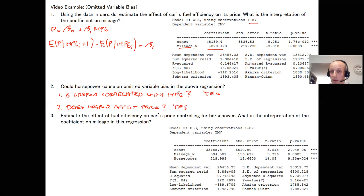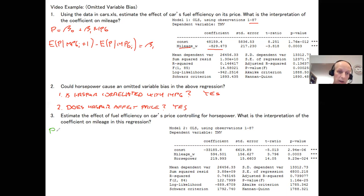So let's see what happens when we try to cure the omitted variable bias by including the omitted variable into the regression. We do that in model number two, where we regress price on both mileage — the same variable as in the first regression — and also include the previously omitted variable, horsepower. The regression equation looks like: price = beta zero + beta one × miles per gallon + beta two × horsepower.